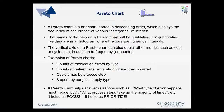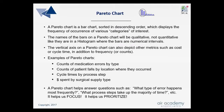Some examples of Pareto charts might be the counts or frequency of medication errors by type of error or by reason of error. Another might be the counts or frequency of patient falls by location of where they occurred. Another might be the cycle times by process step, or the cost spent by surgical supply type. A Pareto chart helps us answer questions such as what type of error happens most frequently, or what process steps take up the majority of time.